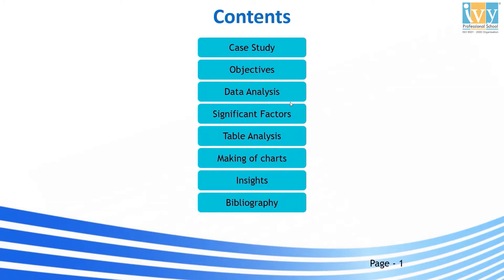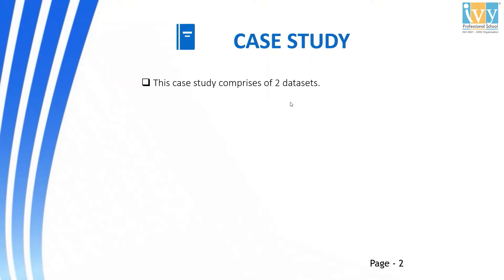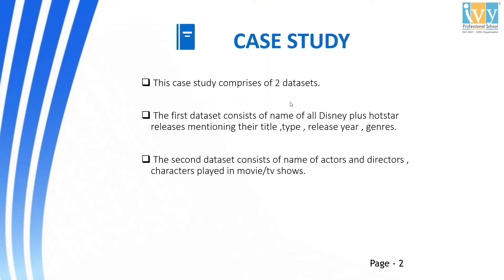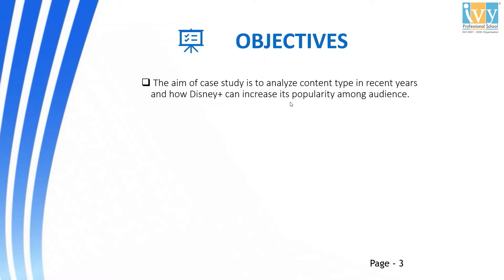These are the topics we will discuss in this project. This case study comprises two datasets. The first dataset consists of names of all Disney Plus Hotstar releases, mentioning their title, type, releases, and genres. The second dataset consists of names of actors and directors and the characters played by them in movies or TV shows. The aim of the case study is to analyze content type in recent years and how Disney Plus can increase its popularity among the audience.